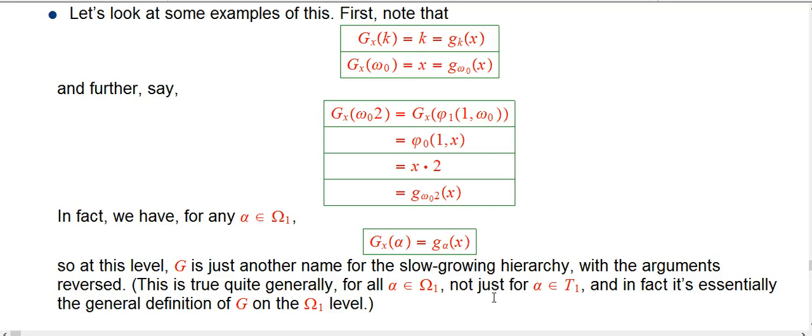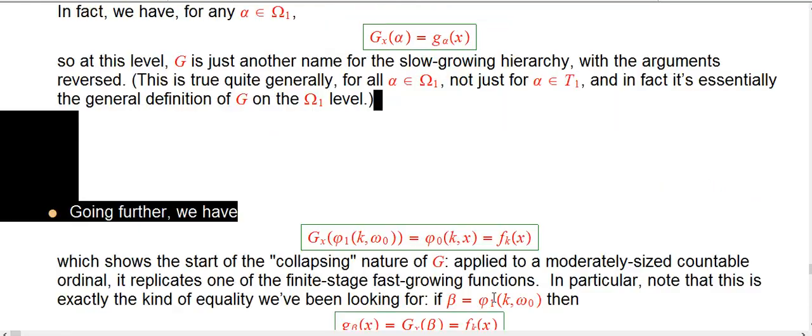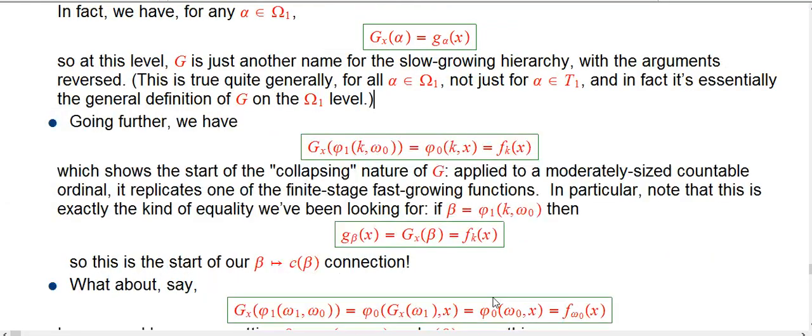But the fact that they're the same function in disguise is really key. And it's going to be a key to the connection between the F, the fast growing hierarchy, and the slow growing hierarchy. So I hope that's not too obscure, this kind of parameter and input switching.